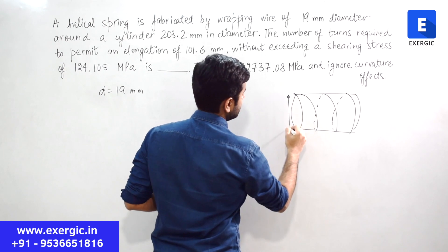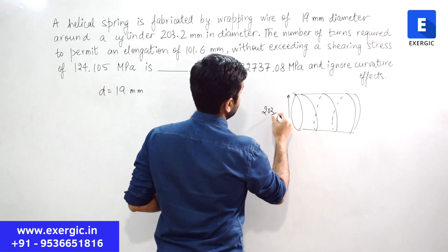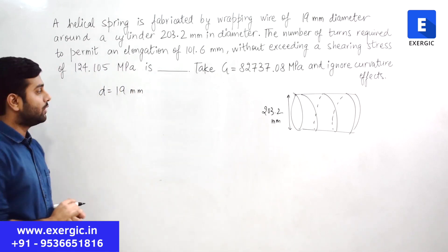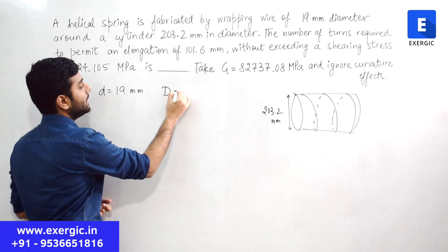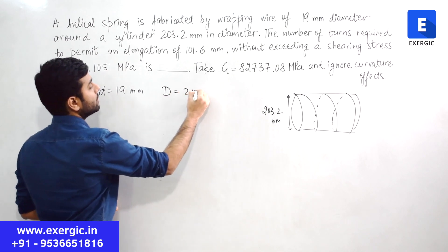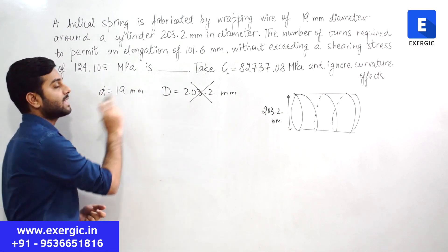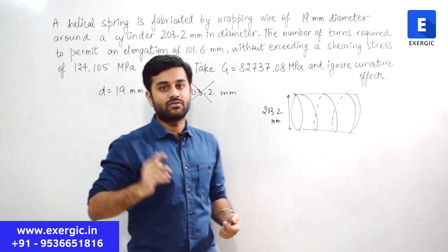How much is this? It is 203.2 mm and many of the students what they will do, they will put capital D as 203.2 mm which is incorrect.